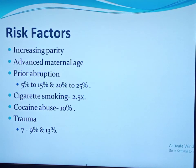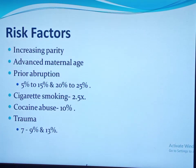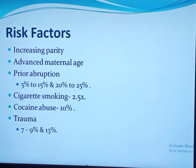Advanced maternal age also increases the risk, but studies found that if parity and hypertension are controlled, advanced maternal age has no significant independent impact. Previous history of abruption is the strongest risk factor. A woman whose previous pregnancy was complicated by abruption has a recurrence risk of 5 to 15 percent. If two previous pregnancies were complicated by abruption, the recurrence risk is 20 to 25 percent.